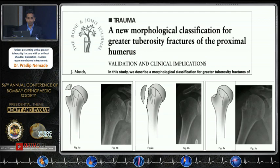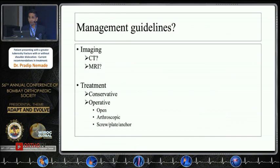A newer classification, which is more popular, categorizes fractures as either avulsion type, split type, or compression type. The avulsion type is mainly due to muscle pull; the impaired displacement or split fracture is due to acromion impingement; and the impression fracture is due to fracture dislocation.